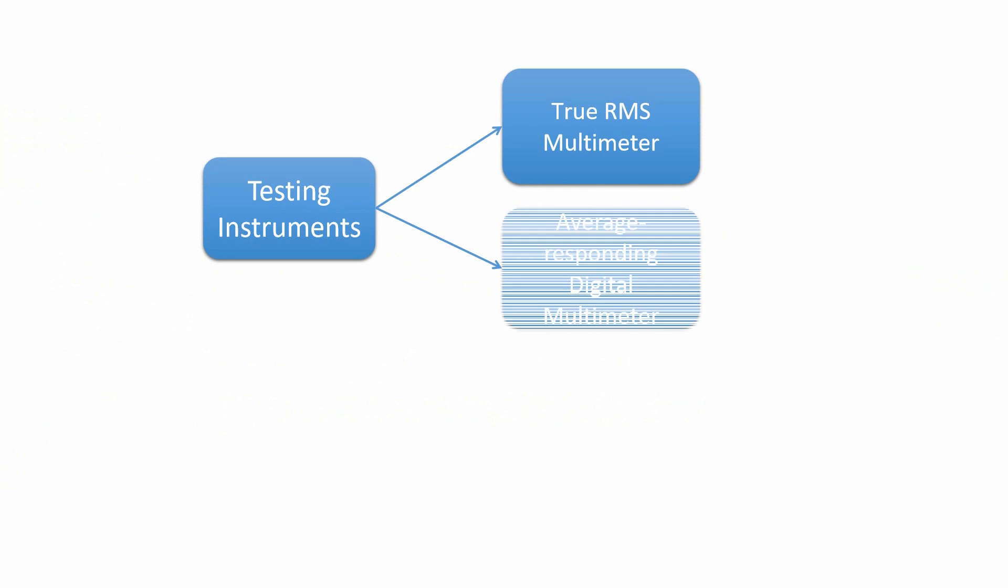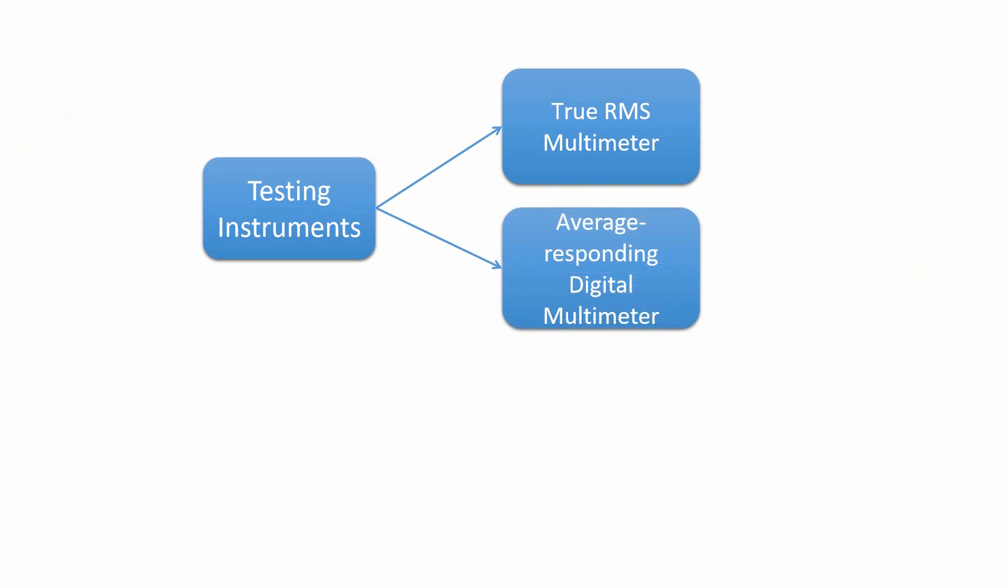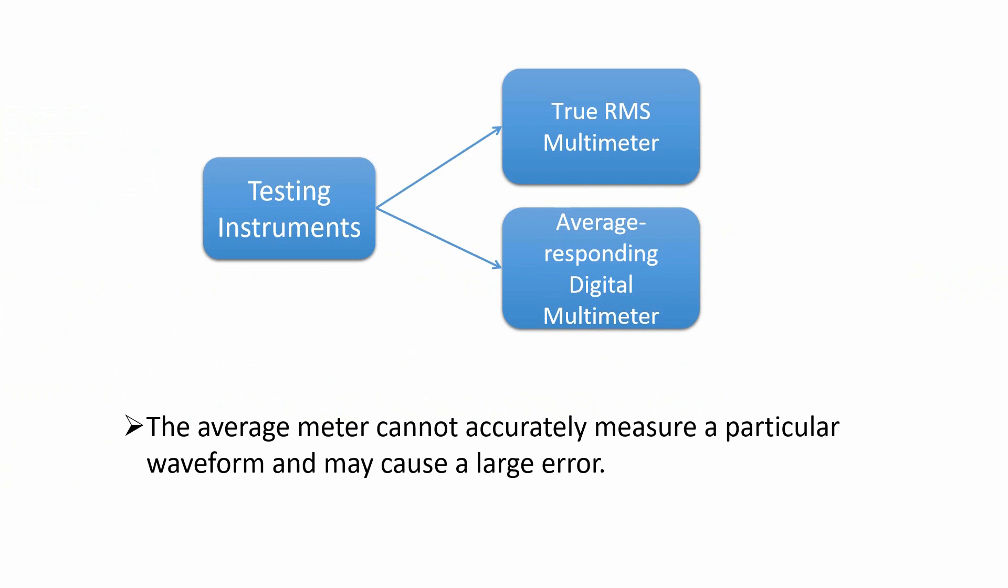Current testing instruments include the true RMS multimeter or average responding digital multimeter. However, the average meter cannot accurately measure a particular waveform and may cause a large error. The output voltage and current tested by the true RMS multimeter are the true RMS value, so the power calculated according to the tested output voltage and current is the effective power.